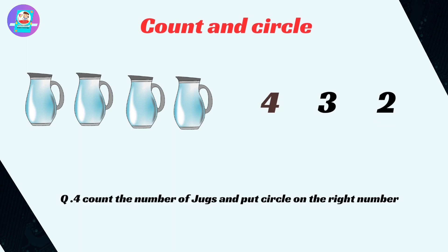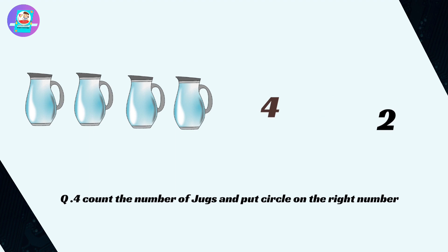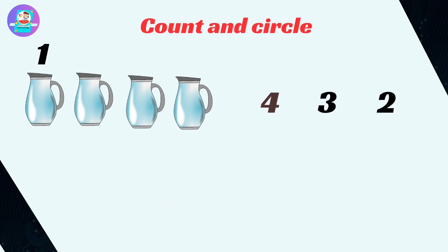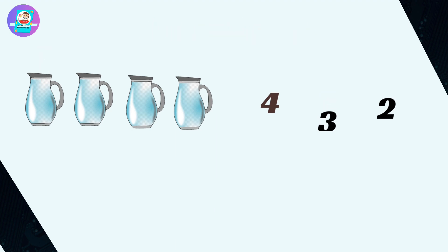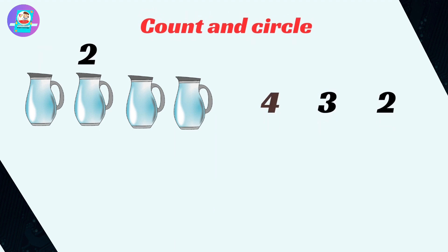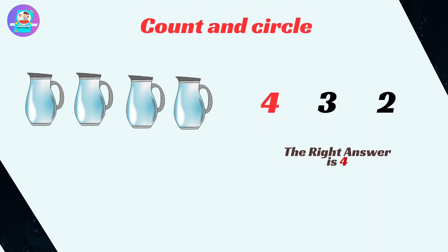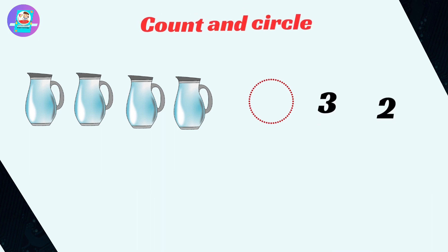Okay next. Count the number of jugs and put circle on the right number. Let's count the number of jugs here. 1, 2, 3, 4. Okay here the number of jugs is 4, then 4 will be the correct answer. So put circle on 4 which is correct answer.